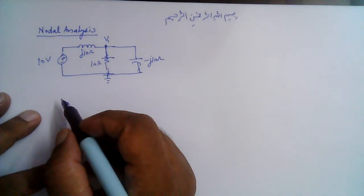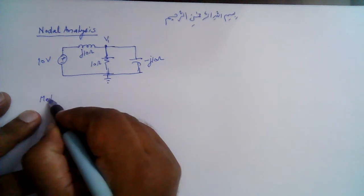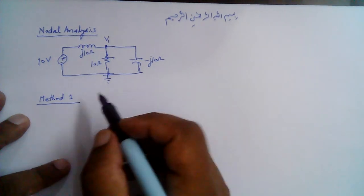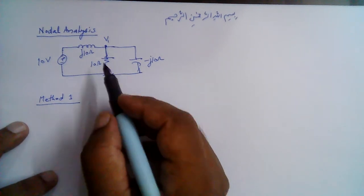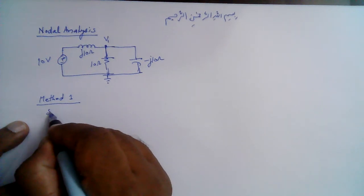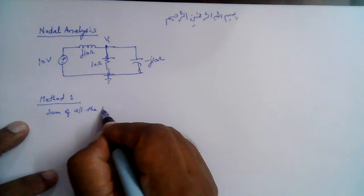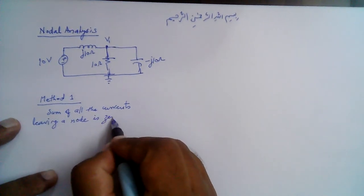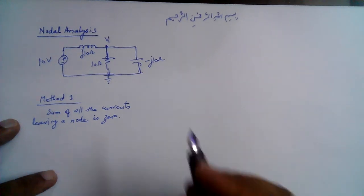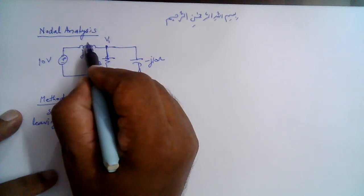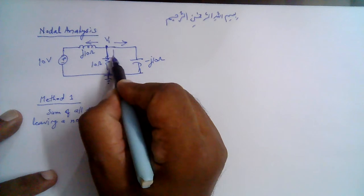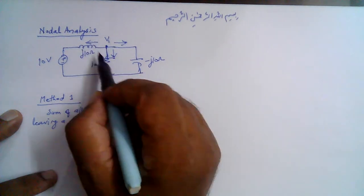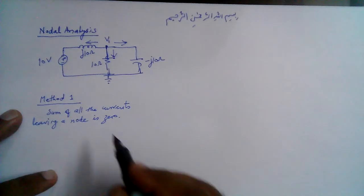Method 1: we use the form of Kirchhoff's current law which states that the sum of all currents leaving a node is zero. This node has three branches, so there are three currents. We suppose that all three currents are leaving the node, and their sum should equal zero.